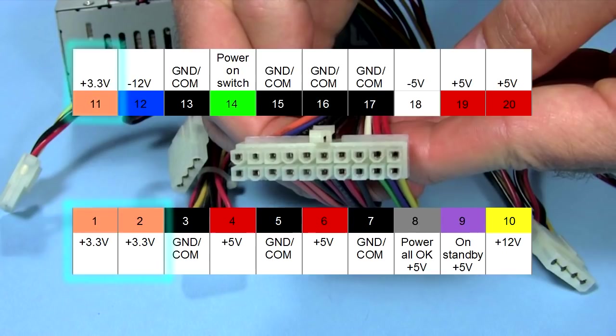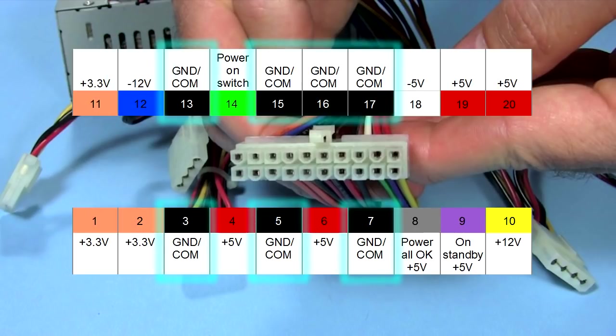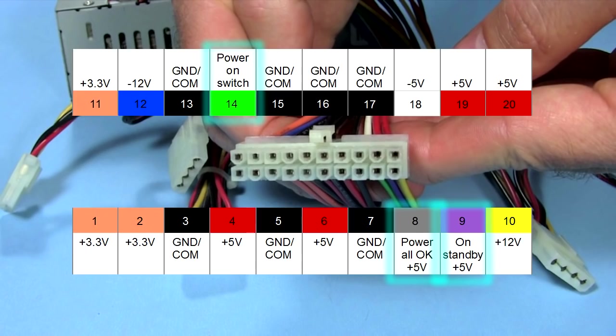Orange is plus 3.3 volts, red is plus 5 volts, yellow is plus 12 volts, blue is minus 12 volts, and white is minus 5 volts. The blacks are all ground, or common.